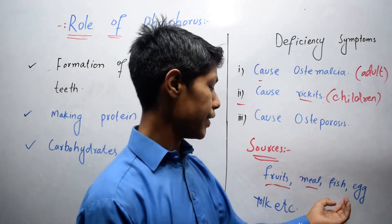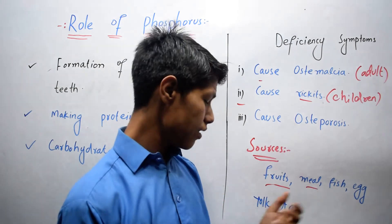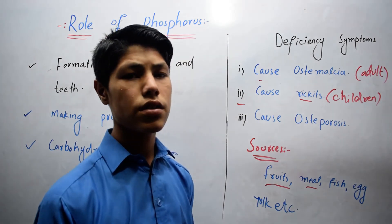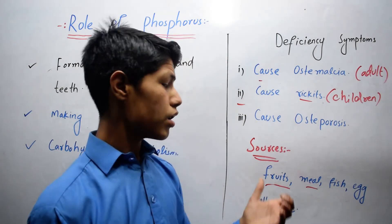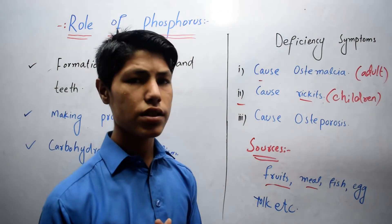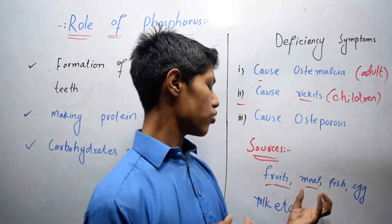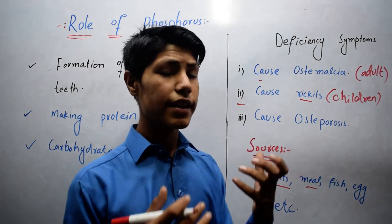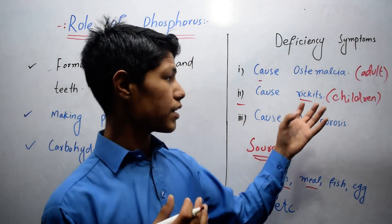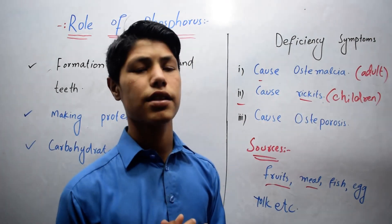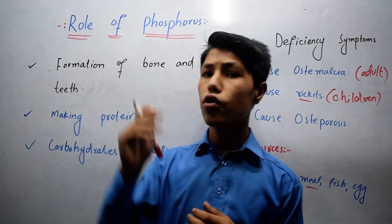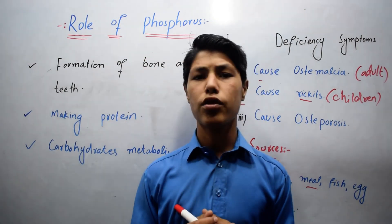fish, egg yolk, vegetables, etc. These all are the sources of phosphorus. From these sources we can get phosphorus, which helps us to prevent these diseases. So this was all about the role of phosphorus.